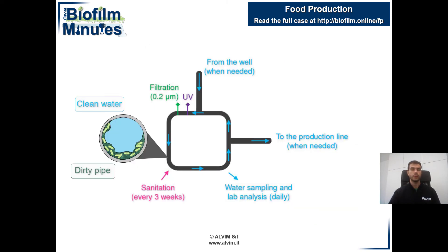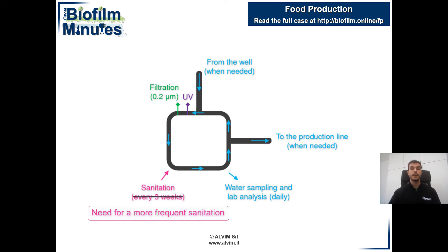Coming back to our water loop, clean water was flowing in a dirty pipe, because even the few bacteria surviving the combined physical treatments were enough to settle on surfaces and lead to biofilm growth. To solve the problem, a more frequent sanitation was applied to keep the system clean from biofilm. This was possible thanks to the indication provided by the Alvin sensor.